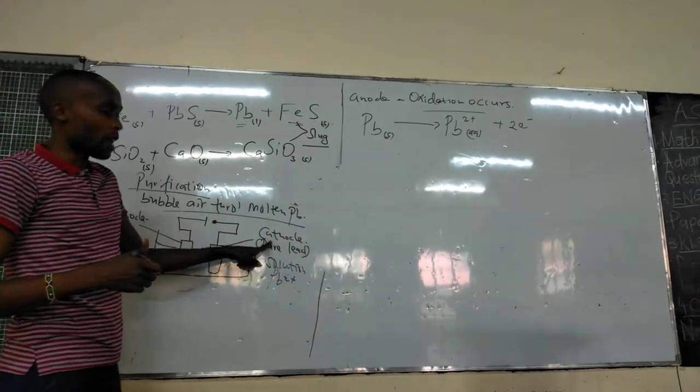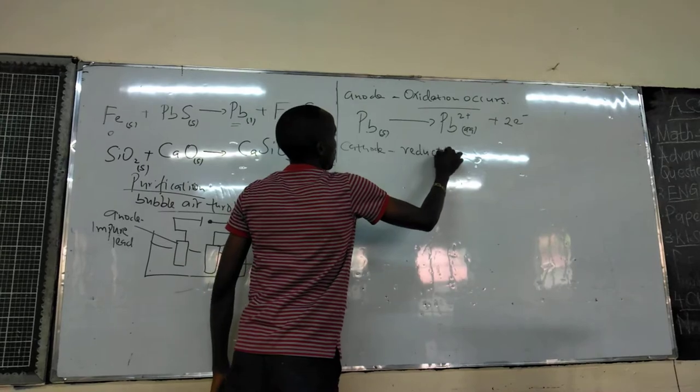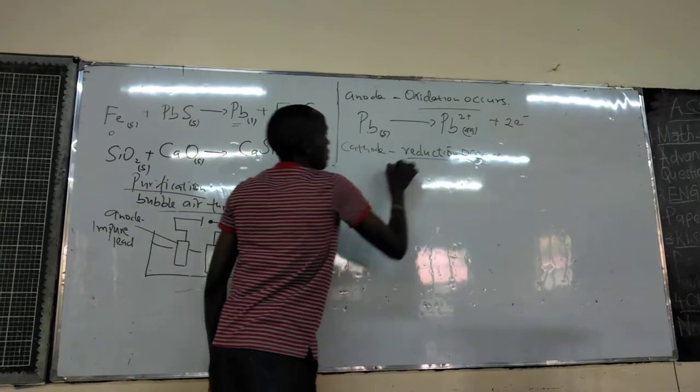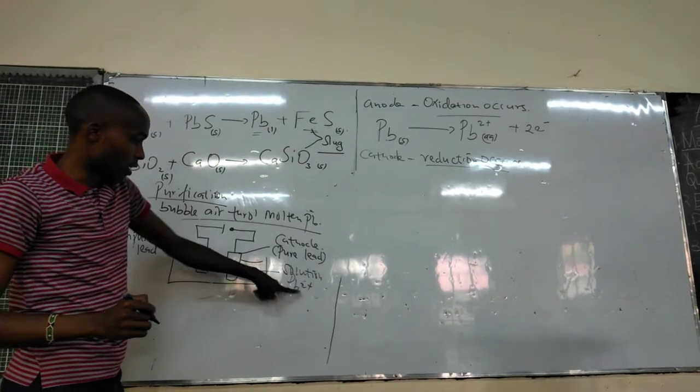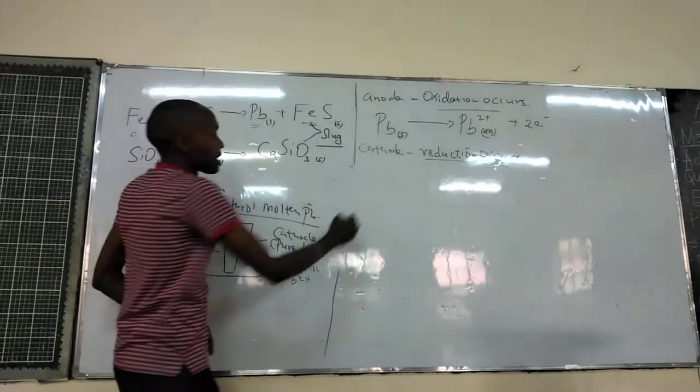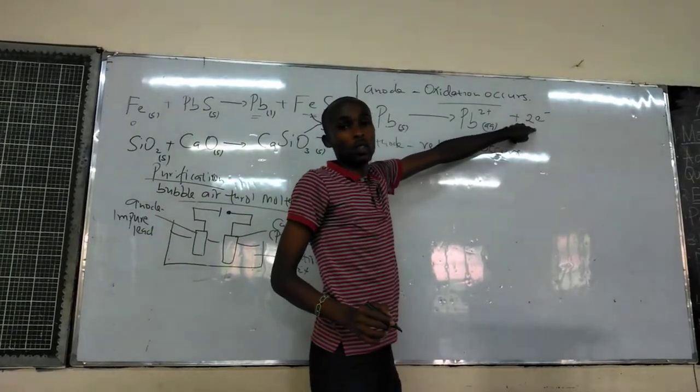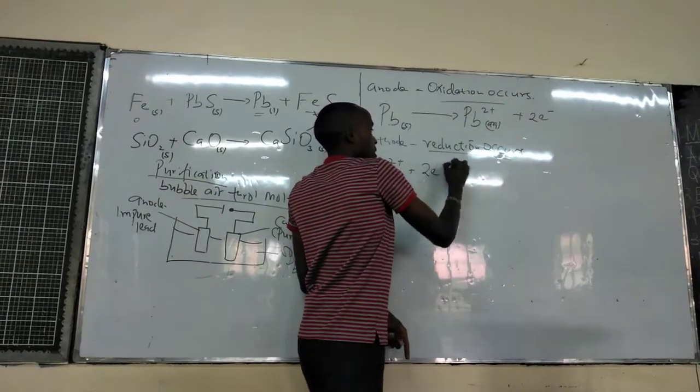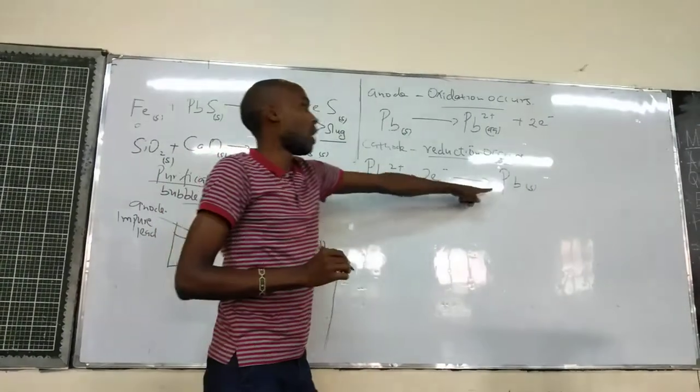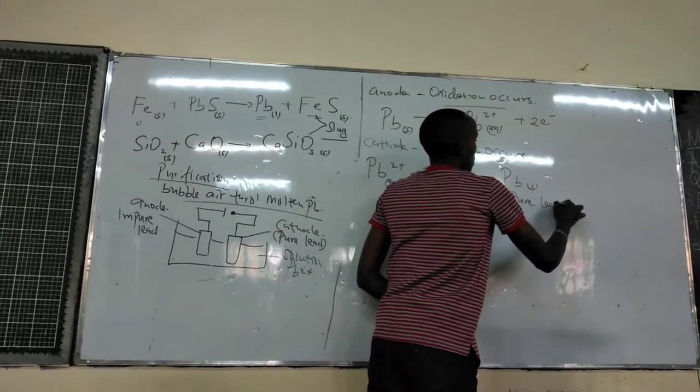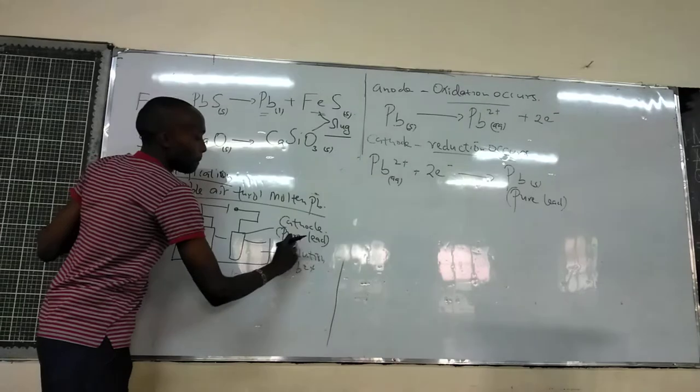Come to the cathode. After the cathode, that is where reduction occurs. And the reduction means gaining of electrons. So, here, the lead ions present in the solution, remember this solution is made up of lead ions, are going to take up two electrons released at the anode. And we are going to form lead atoms. And this now will be pure lead.